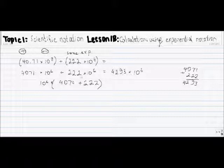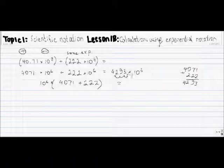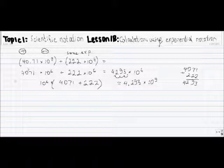Looking carefully, 4293 is not in correct scientific notation because the decimal is not between the first and second digit. We need to move the decimal point between 4 and 2, shifting it left — so instead of 4293 we get 4.293. The number decreased by 3 places, so 10 to the 6 must be increased by 3 places, giving 10 to the 9. The final result is 4.293 times 10 to the 9. This is Method 1.